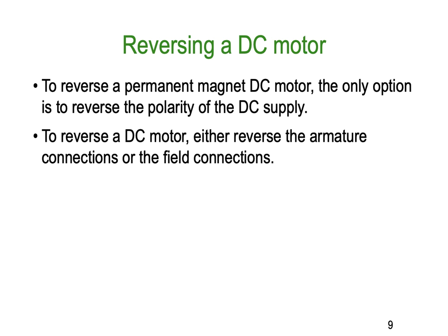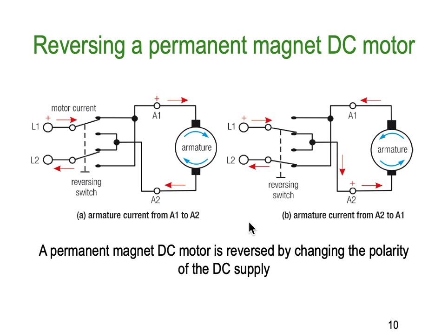To reverse a DC motor you've either got to reverse the armature connections or the field connections. If you reverse both, both change in the same direction and your motor won't reverse. Reversing a permanent magnet motor is typically done with a two-pole changeover set of contacts. Here's our supply plus and minus, with two sets of contacts mechanically operated together as a reversing switch with changeover contacts.